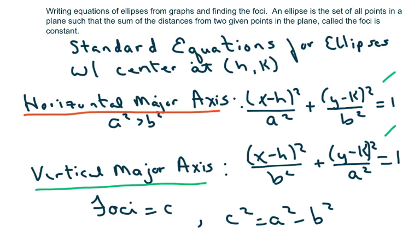What we have at the bottom is a squared under the x portion and b squared for the horizontal major axis. And then we switch the a squared and the b squared for the vertical major axis.